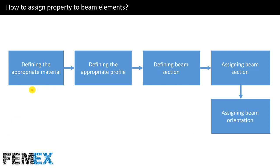Now I want to talk about assigning property to beam elements. In the previous tutorial, I defined the appropriate material. In the second step, I must define the appropriate profile. In the third step, I must define the beam section. In the fourth step, I must assign beam section. And finally, I must assign beam orientation.